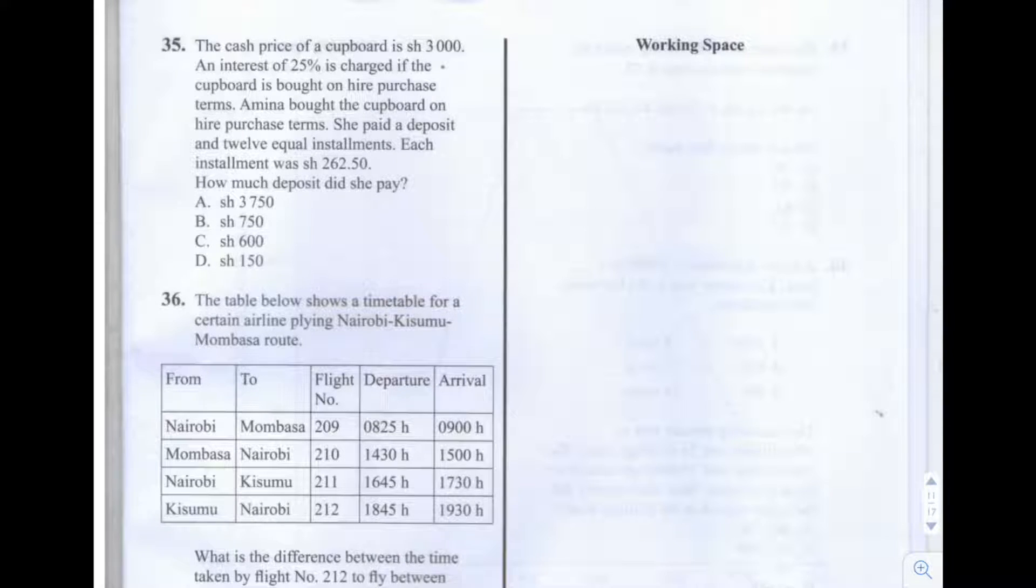This is question number 35 of the 2013 KCPE Maths paper. The cash price of a cupboard is 3,000 shillings. An interest of 25% is charged if the cupboard is bought on hire purchase terms. Amina bought the cupboard on hire purchase terms. She paid a deposit and 12 equal installments, each installment was 262 shillings and 50 cents. How much deposit did she pay?